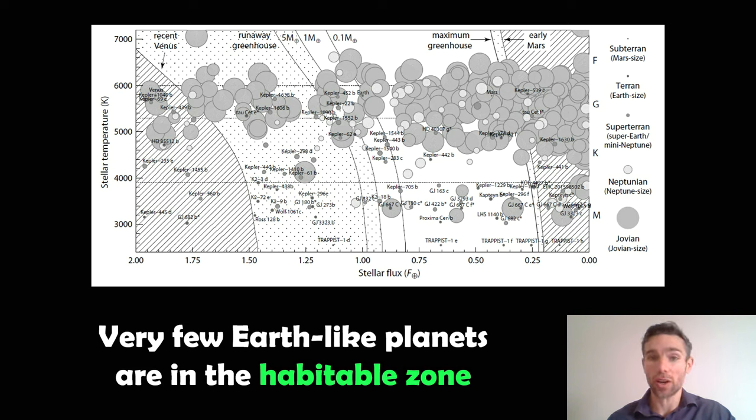That's the amount of starlight that makes it to the planet. Now, a stellar flux of 1 means it's getting the same amount of energy to the surface of the planet that Earth gets. So it's normalized to Earth. So stellar flux of 1, that's pretty much what Earth is.